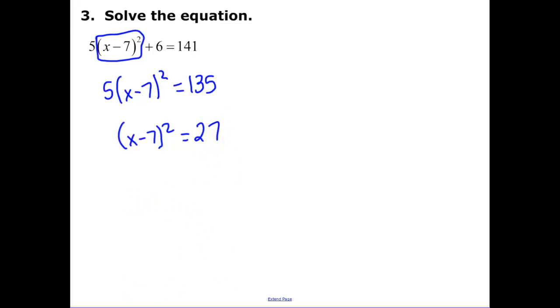Now we square root. So x - 7 is going to be equal to plus or minus, 27 is 9 times 3, so I can pull out a 3 root 3. Then we can add that 7 over to get those two answers.